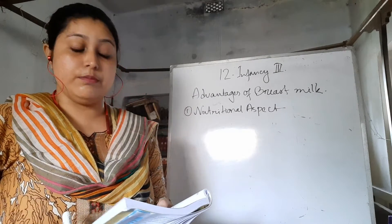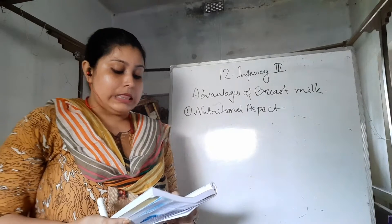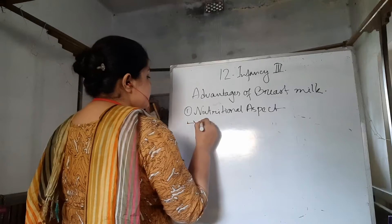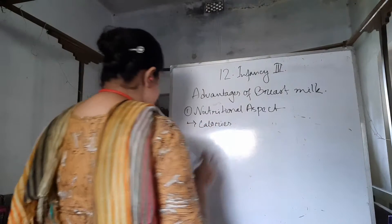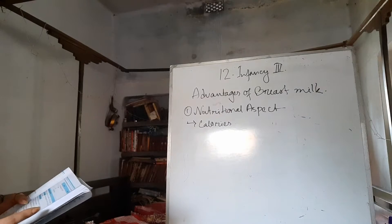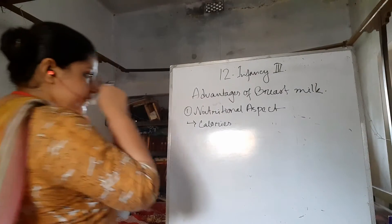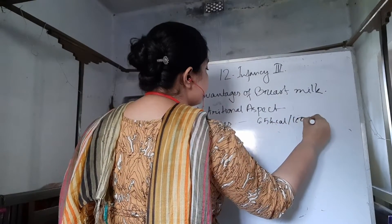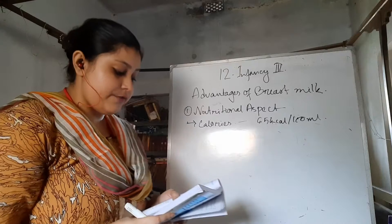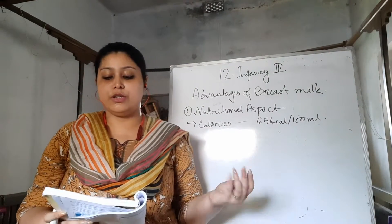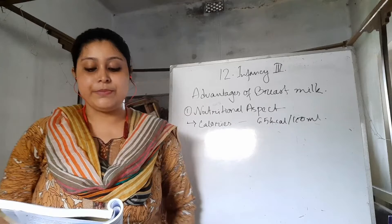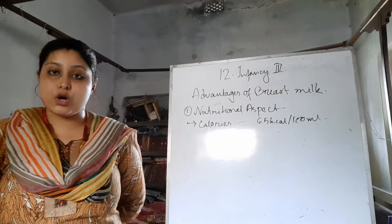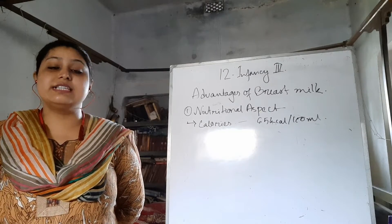It can be easily absorbed by the baby's body. The main nutritional contributions are, firstly, calories. It gives 65 kilocalories of energy per 100 ml, which is enough for the infant. The main sources of calorie are glycogen, glucose, fatty acids, etc. The carbohydrate calorie present is higher in breast milk, which is very important and desirable.